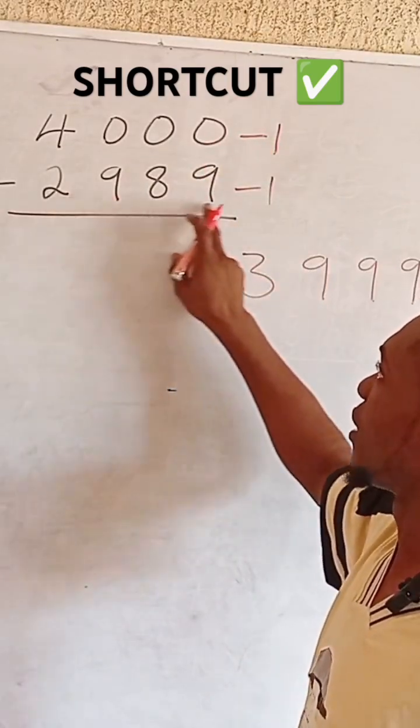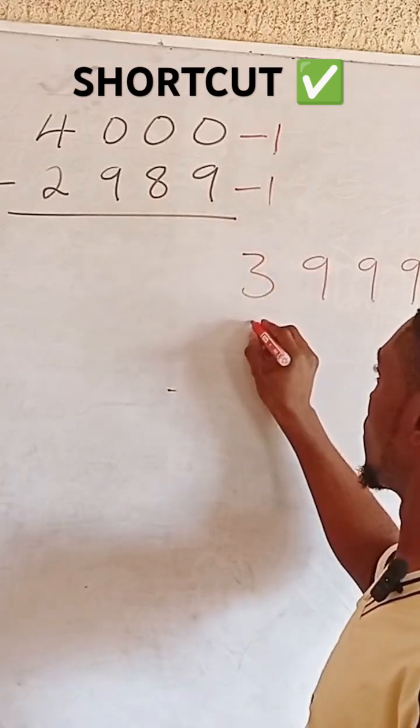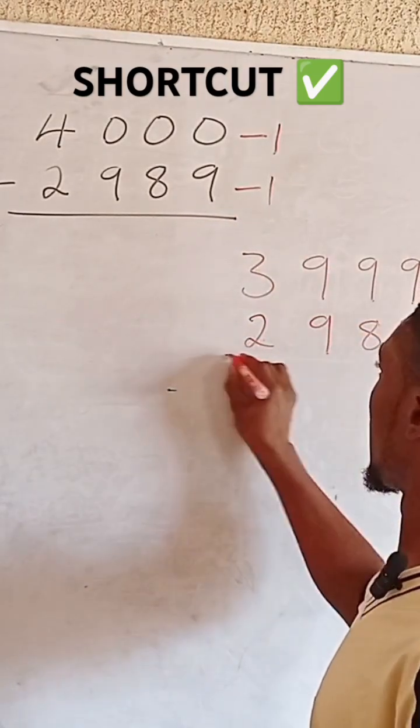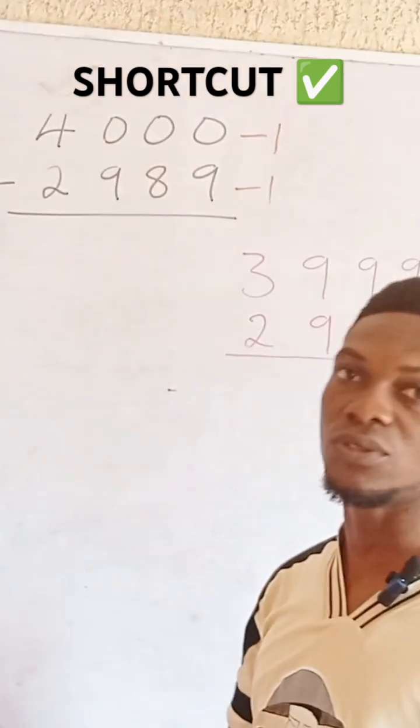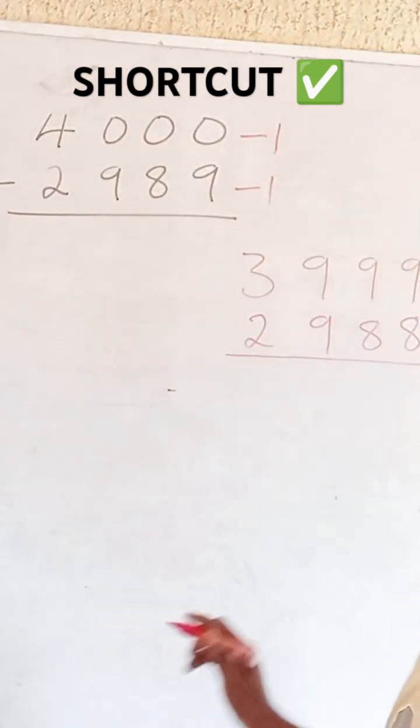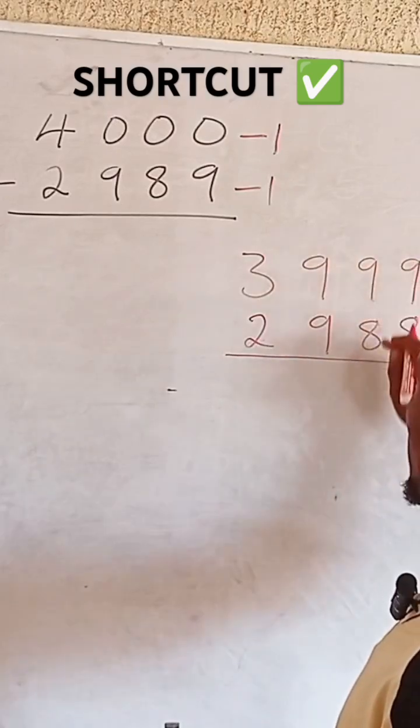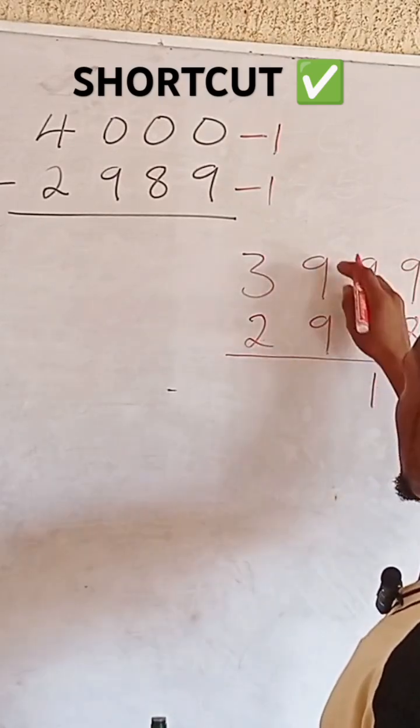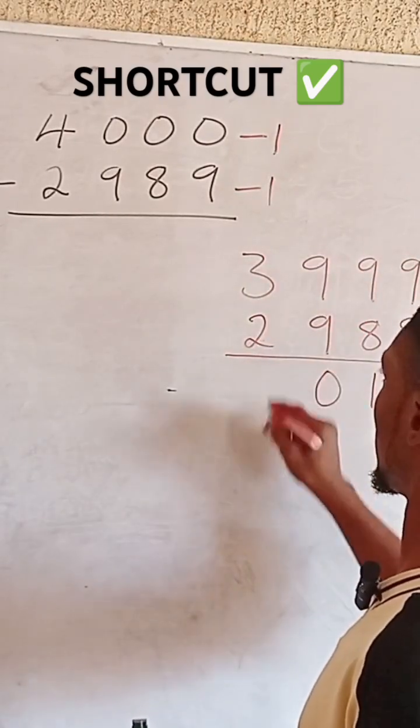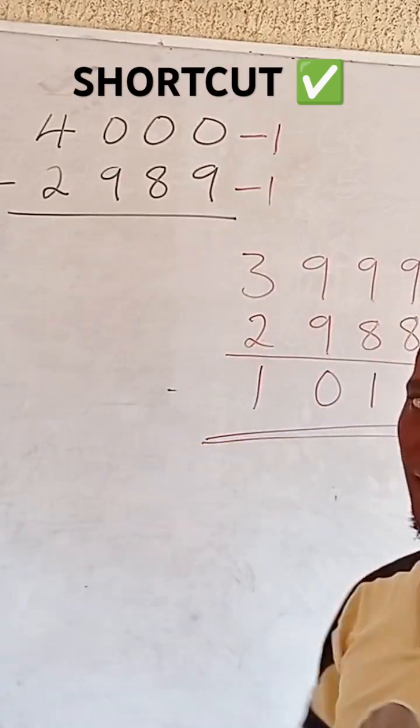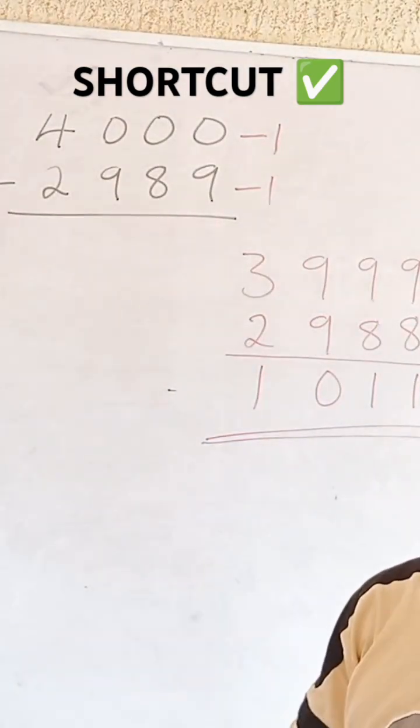So 2989 minus one will give you 2988, and that makes it very easy for you to subtract, leaving no errors. Nine minus eight is one, nine minus eight is one, nine minus nine is zero, and three minus two is one. You don't need to borrow at all. There's no need for borrowing. Please stop borrowing.